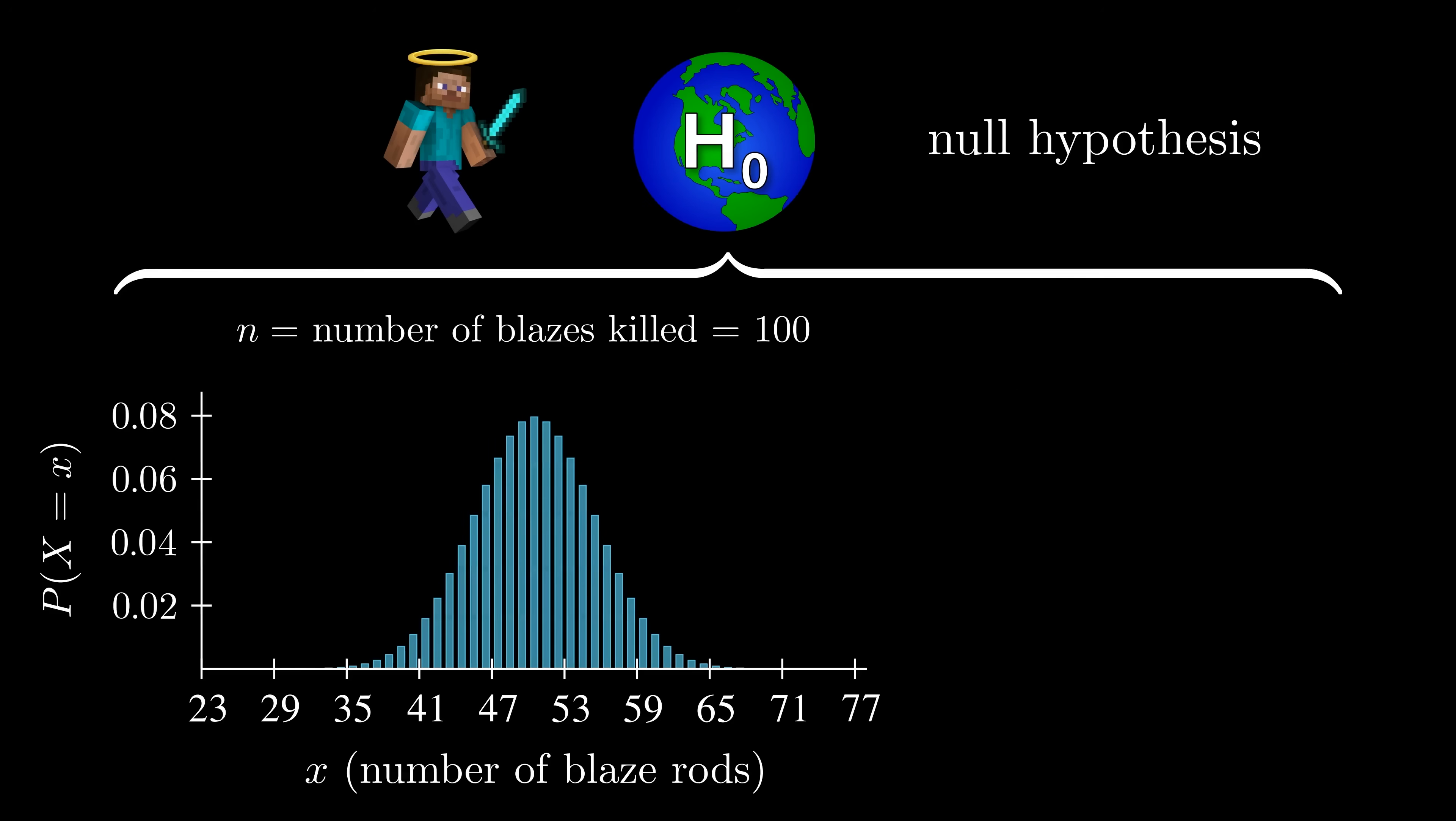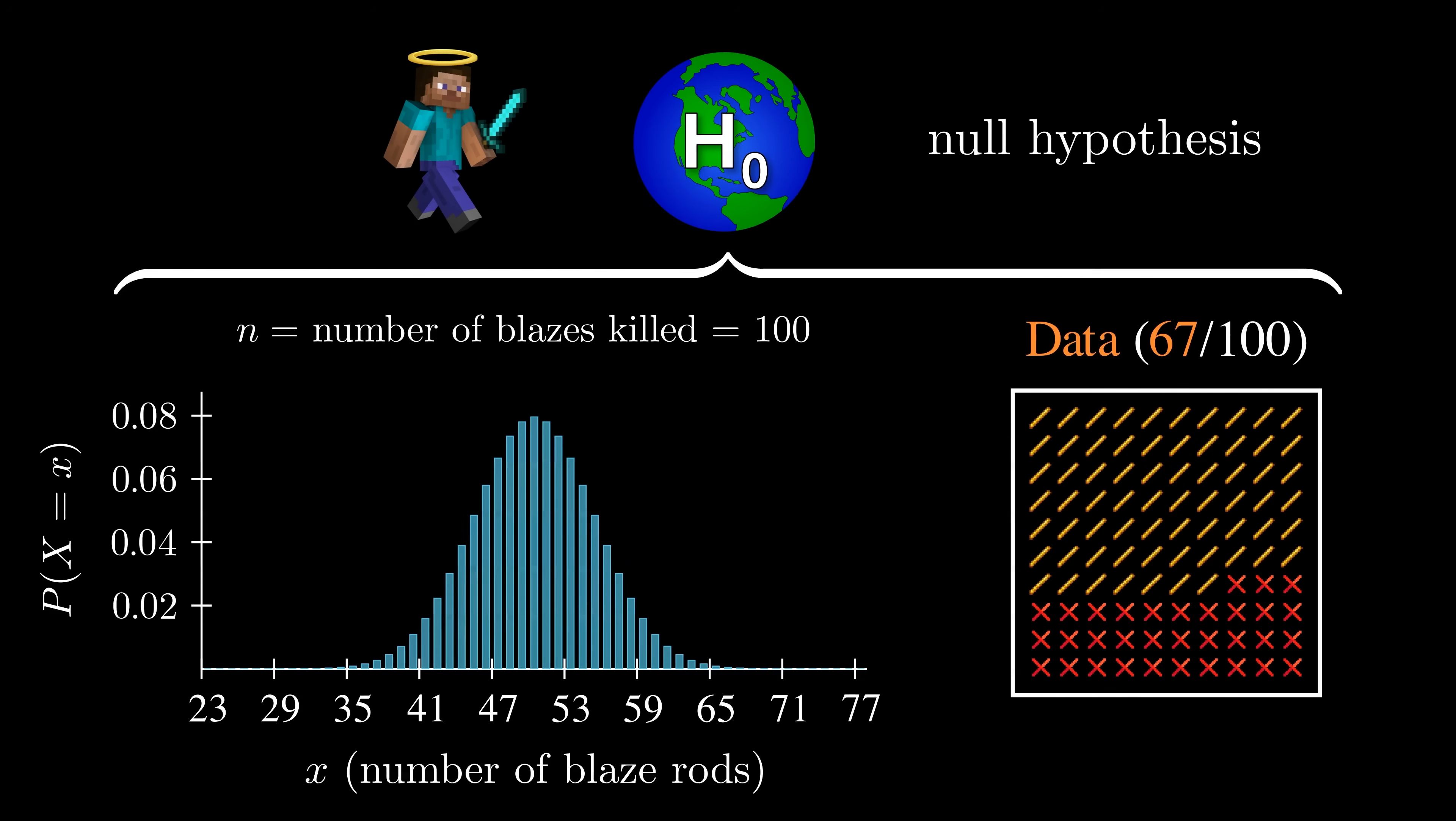The data that we observed was our friend collecting 67 rods. Getting a result at least as extreme as the observed result would mean getting at least 67 rods. To find this probability,